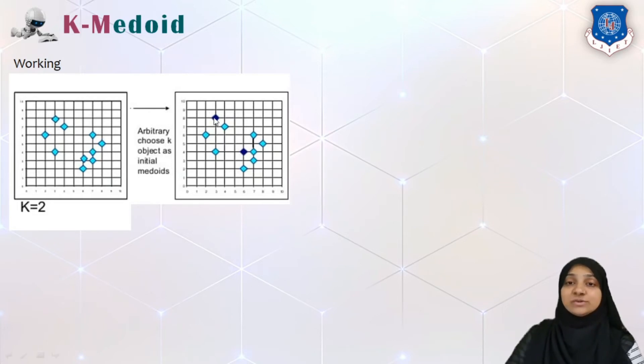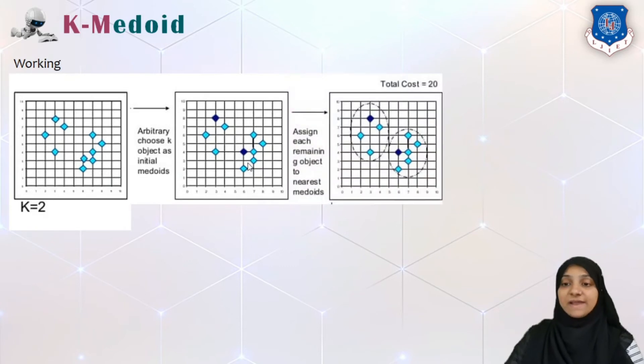Now we will assign all the nearest data point to all these two different medoids. Now as you can see, to this data point, this point, this point and this point is the nearest, and towards this data point this rest of the five points are the nearest. So we will assign them to the nearest medoid to an object. Hence we have calculated or we have found initial two clusters.